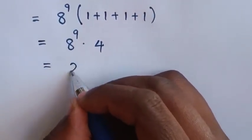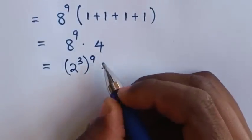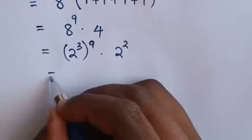8 is same as 2 power 3, then bracket power 9, times 4 is same as 2 power 2. So this will be equal to